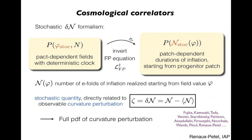One can actually invert the Fokker-Planck equation and ask another question: starting from a given field value in the patch that gives rise to our universe, what is the local number of e-folds of inflation in the different Hubble regions? Then, similarly to the usual delta-N formalism, one can deduce the large-scale curvature perturbation as the fluctuation in the local number of e-folds, which is a stochastic quantity here, and then derive non-perturbative results like the full PDF of zeta.